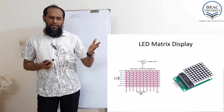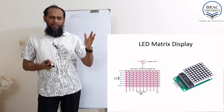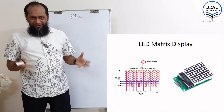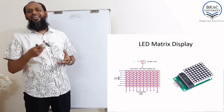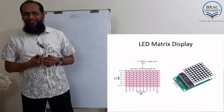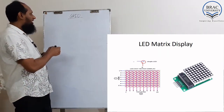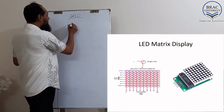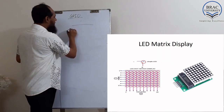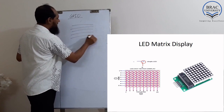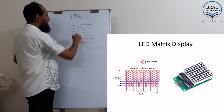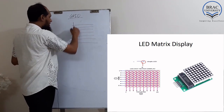Matrix display is actually like a matrix — like an 8 by 8 matrix. 8 by 8 matrix means 8 rows and 8 columns.